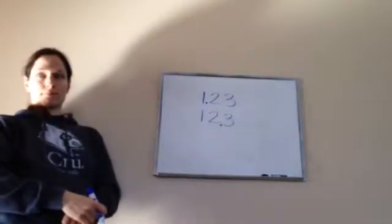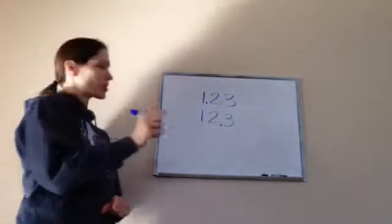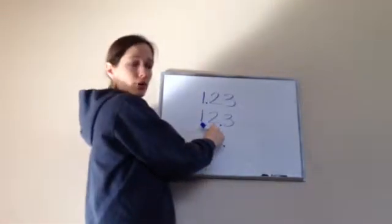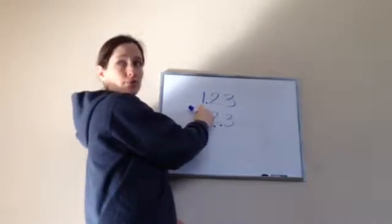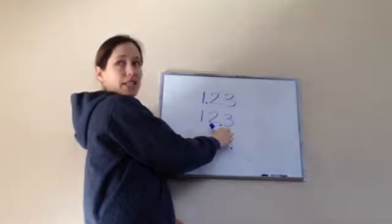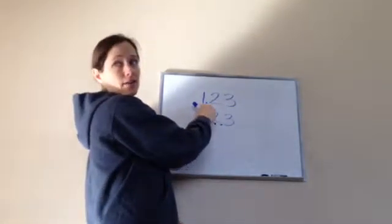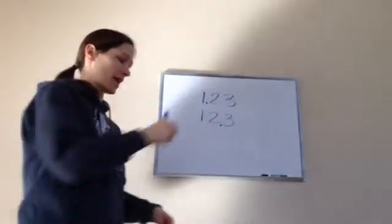Which one's a bigger number? The second one. Yes, 12.3. Because 12 is the whole number; one is the whole number. So it'd be like I have 12 pies and then 3 tenths. This would mean I have one pie and 23 out of 100.